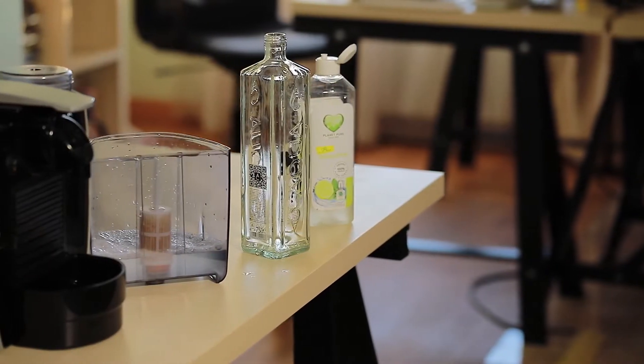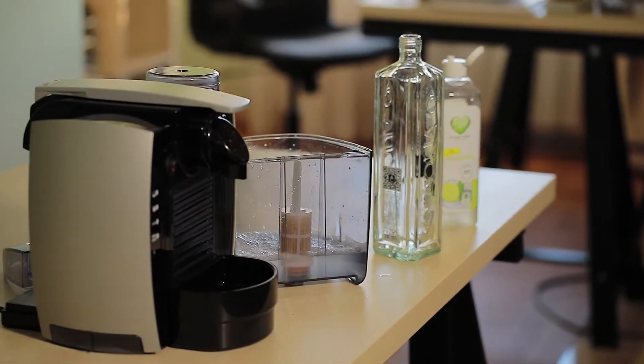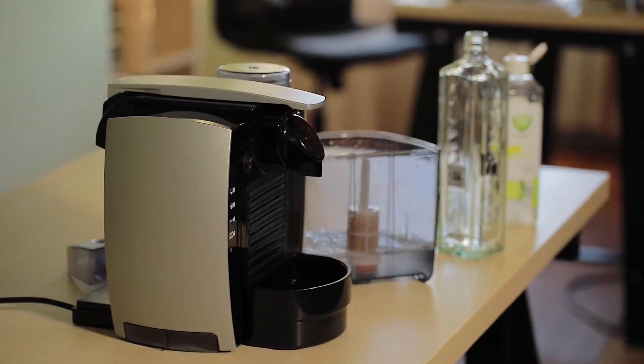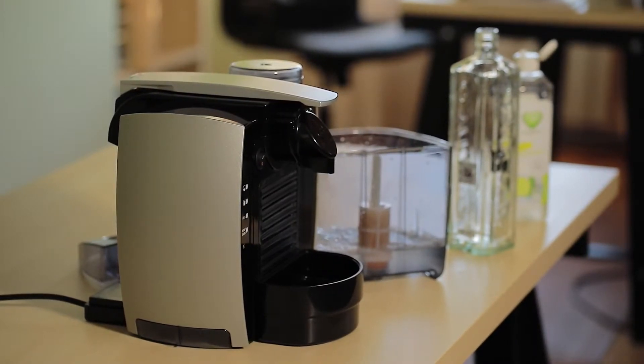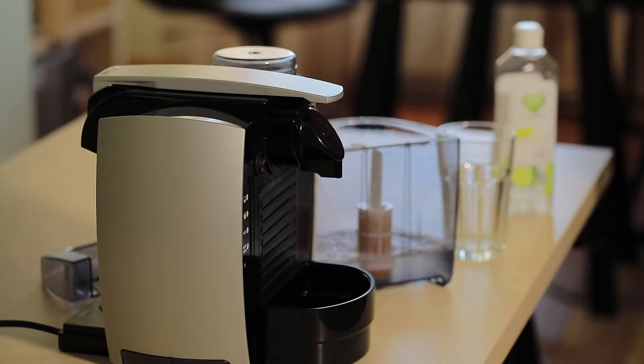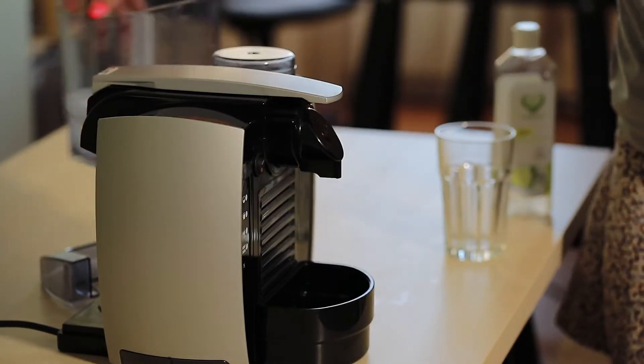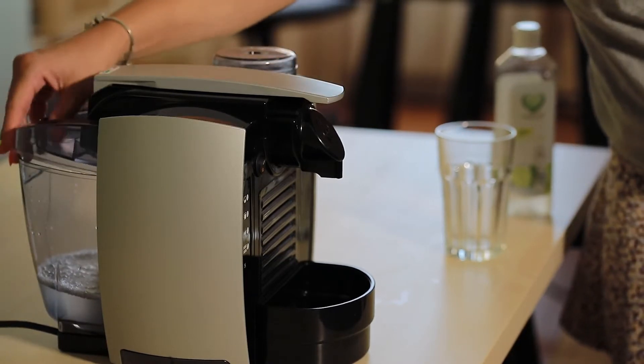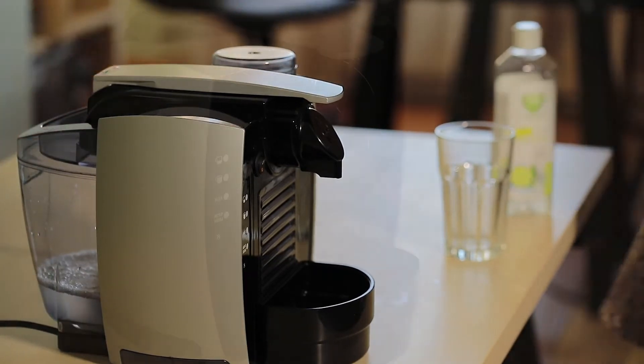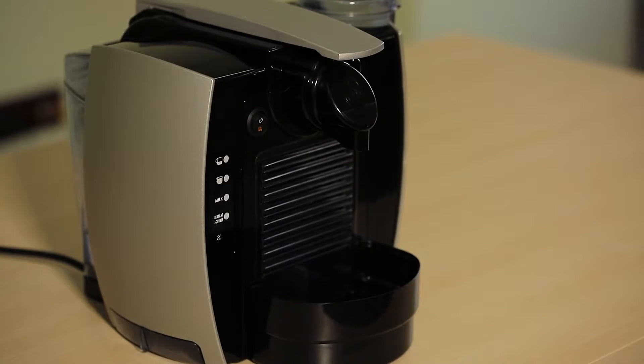You can also prepare the solution from one pill and 100 ml of water. After the pill is dissolved, add 100 ml of water. Replace the water tank in the machine and place a large container under the coffee dispenser.